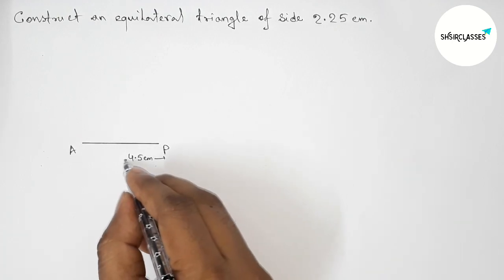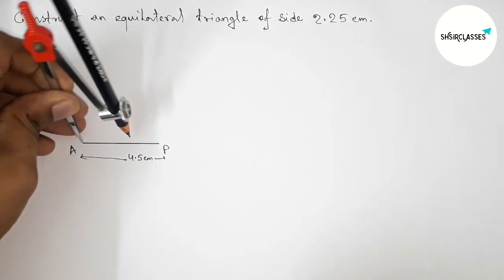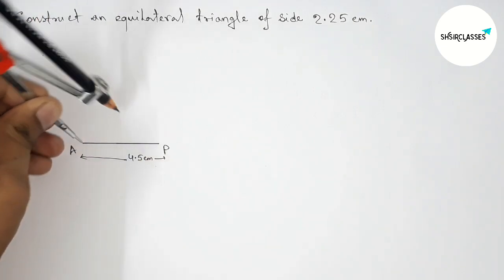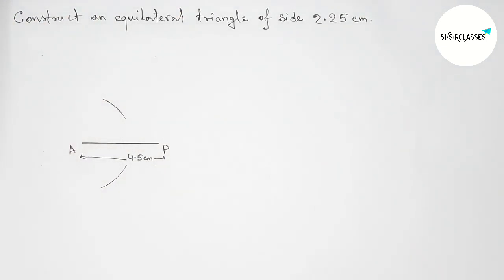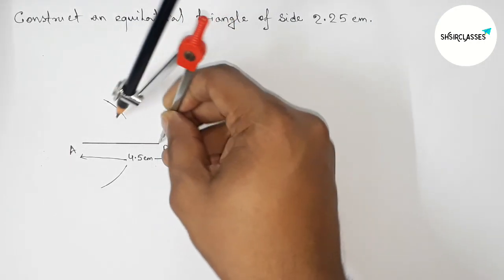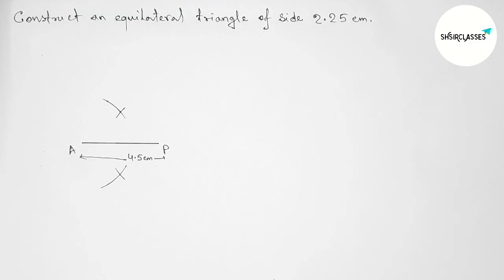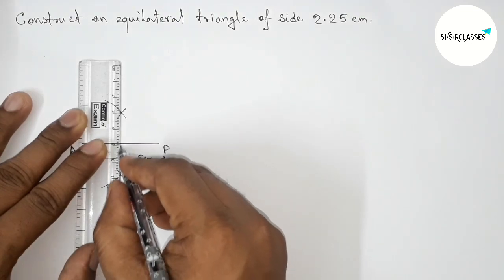Next we have to bisect the line AP. So putting the compass on the point A and taking greater than half of AP and drawing arc here and drawing an arc here. Again with same length and putting the compass here and cut here and cut here. Okay, so now joining this line which bisects the line AP here at a point.